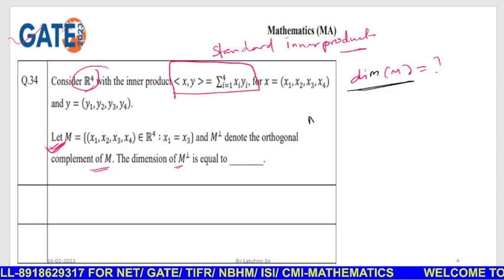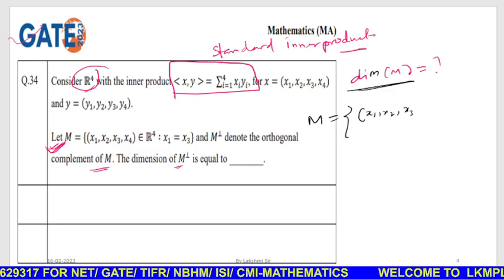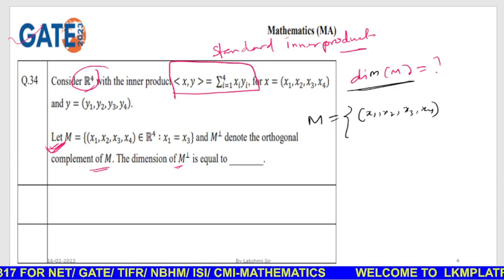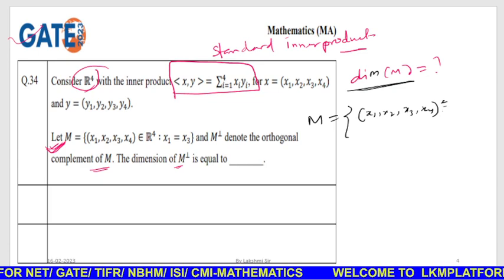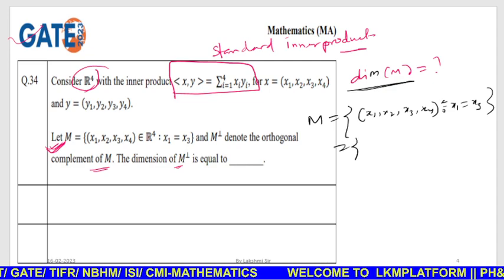So m is the dimension of m: x1, x2, x3, x4, where x1 equals x3. x1 equals x3.